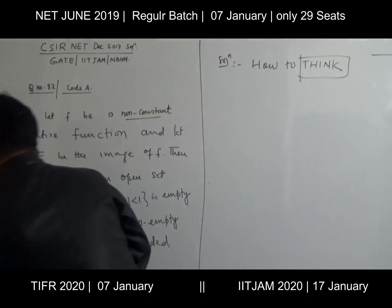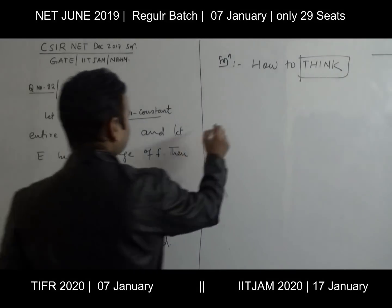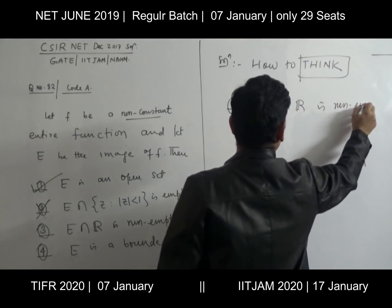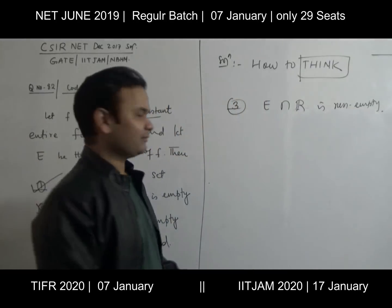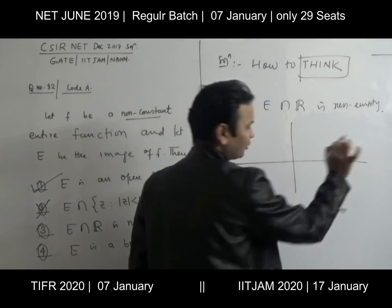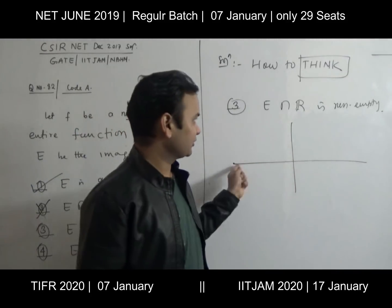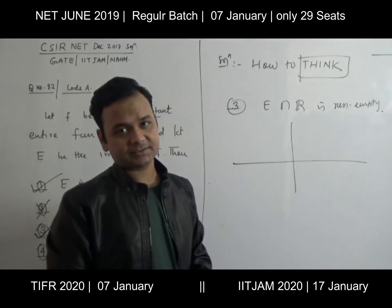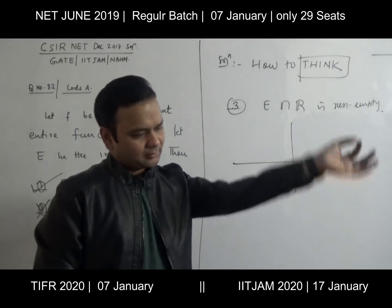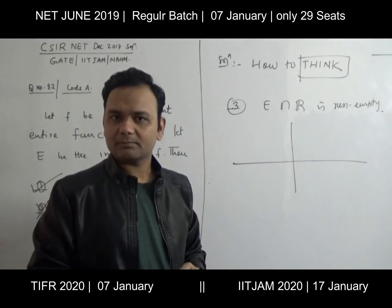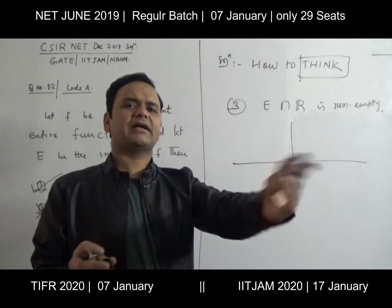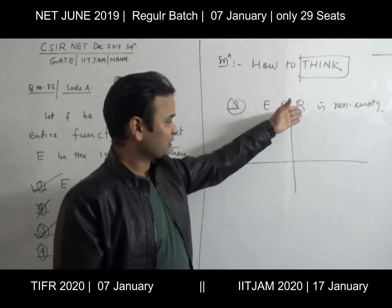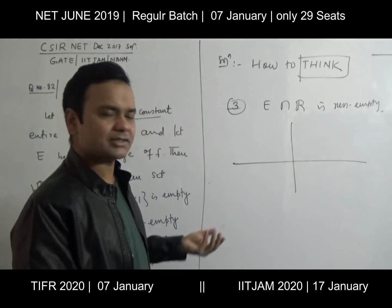Third option: E intersection with R is non-empty. Yes, this is not empty. How many real numbers are there? Uncountably many. The range set omits at most one value, so it will contain uncountably many real numbers. So this intersection is going to be non-empty. Use Picard's theorem — the range set contains all complex numbers except possibly one complex number, so at most one real number can be cut from the range set, and the intersection is non-empty.